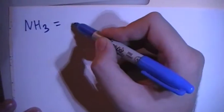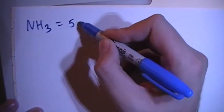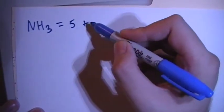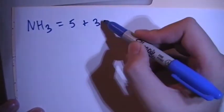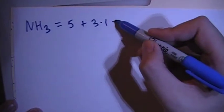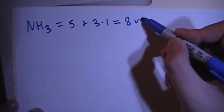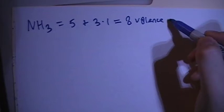Start off with NH3, which is going to give you 5 valence electrons from the nitrogen, plus 3 hydrogens, each with 1 valence electron. So that's a total of 8 valence electrons.